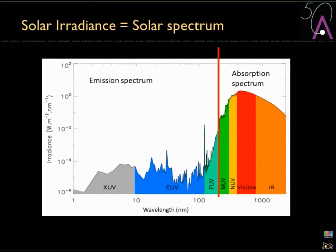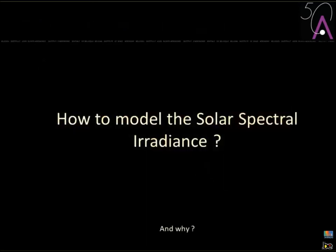We have two interesting parts of the solar spectrum: an emission part below roughly 200 nanometers, and an absorption spectrum part above 200 nanometers. We will see why. The main question for the next roughly 20 minutes is: how do we model the solar spectral irradiance? And for the last 15 minutes, I will explain why it is important to model it.